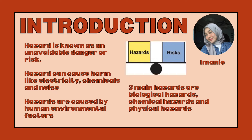Hazard can come in five types. First, we have biological hazards. Second, chemical hazard. Third, physical hazard. Fourth, safety hazard. Fifth, ergonomic hazard. For example, hazards can include working up a ladder, noise, chemicals, and also electricity.